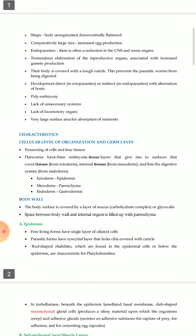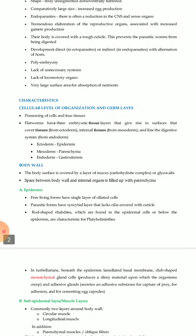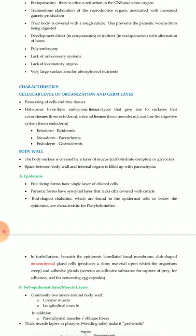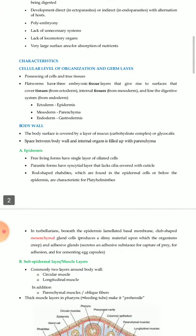Parasitic adaptations found in Platyhelminthes include organs of attachment such as hooks, spines of the haptor, suckers, and adhesive secretions. Body shape is unsegmented and dorso-ventrally flattened; comparatively large size with increased egg production. As endoparasites, there is often reduction in the CNS and sense organs, tremendous elaboration of the reproductive organs, body covered with a tough cuticle to prevent digestion. Development is direct in ectoparasites or indirect in endoparasites with alternation of hosts, polyembryony, lack of unnecessary systems, and lack of locomotory organs.